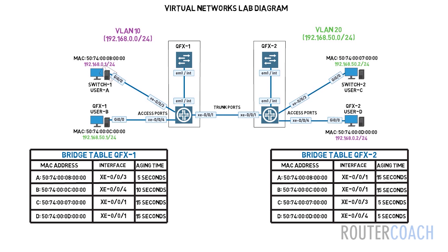So what's going to happen here is that user A will send an untagged frame towards user D. When QFX switch 1 receives that, it's going to examine its bridge table and locate the destination MAC address. Once it finds a matching destination MAC address in its bridge table, it's going to tag that ethernet frame with the correct VLAN ID — in our case VLAN 10 — and forward the tagged frame out the correct exit port, which is the trunk port connected to QFX switch 2.